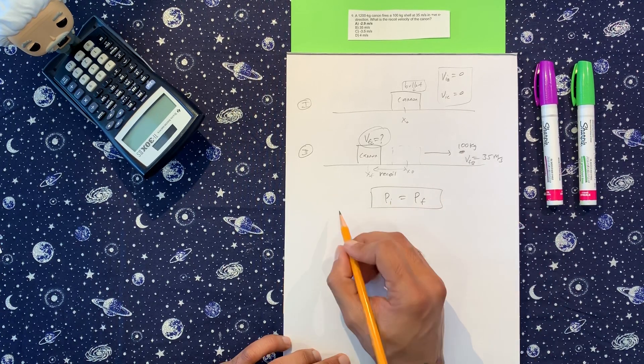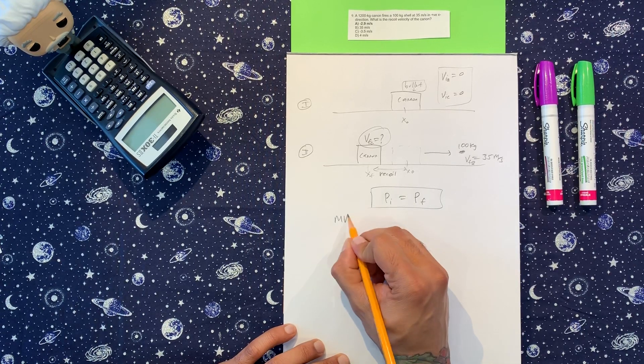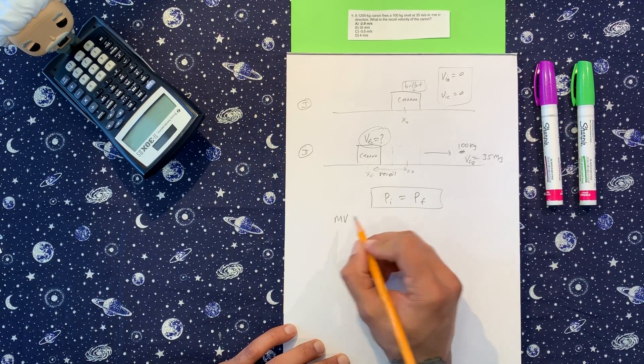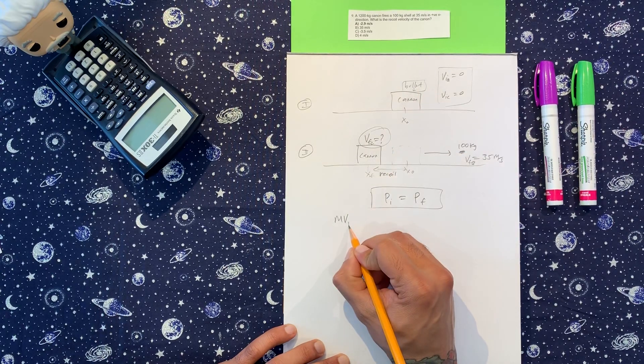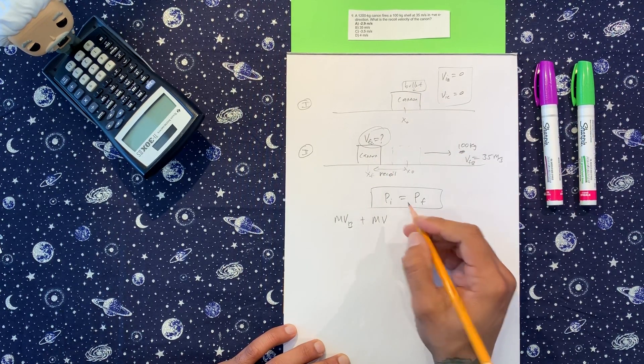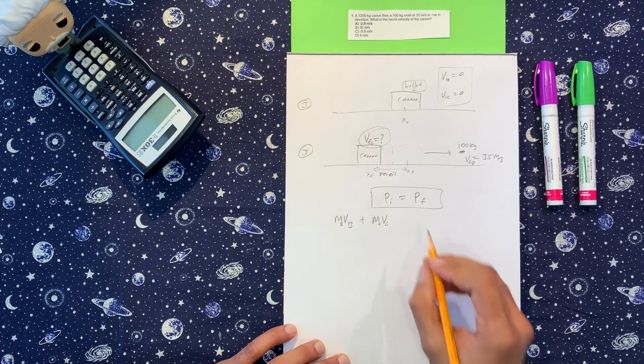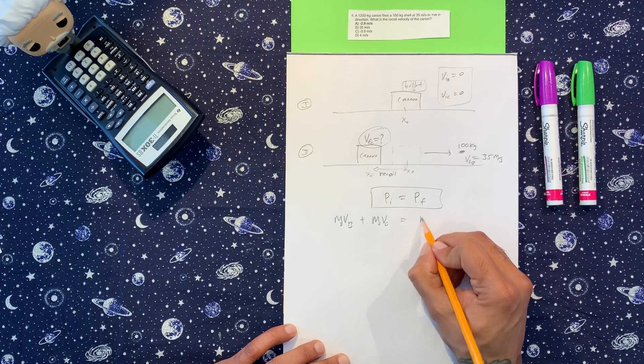Initial momentum is what I'm going to write it out, momentum, MV of the bullet, plus MV of the cannon. And this is mass of the cannon. This is mass of the bullet, is equal to the mass.